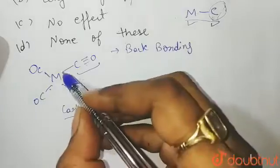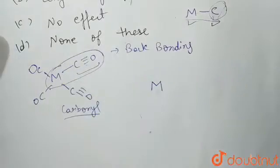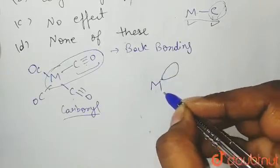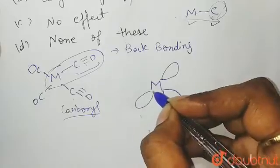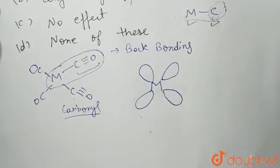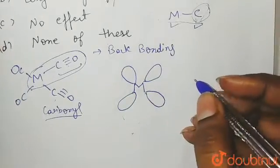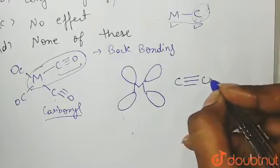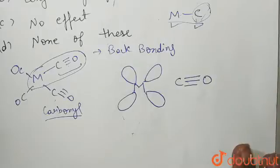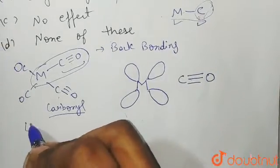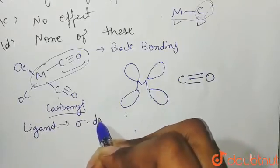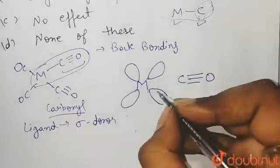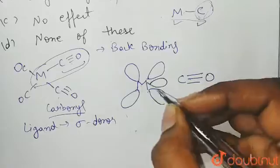Let me show you one of the synergistic bondings in one M-CO bond — that means three other CO groups are also present. The metal has d orbitals, so this is the d orbital of the metal. We have our carbonyl, which is C triple bond O. This carbonyl group is a ligand, meaning it is going to be a sigma donor — it will give electrons to the metal to form a sigma bond.